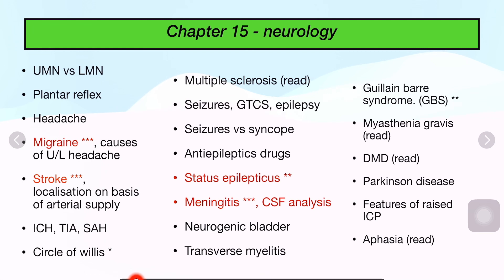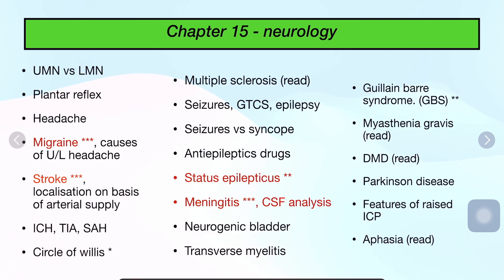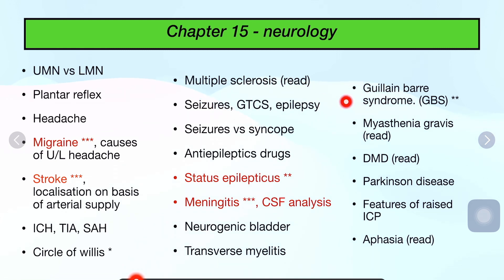Then comes Chapter 15, Neurology. This will also be a big topic, but you can do it. Topics include: upper motor neuron lesions versus lower motor neuron lesions, plantar reflex, headache, migraine, causes of unilateral headache, stroke, localization of stroke, intracranial hemorrhage, transient ischemic attack, subarachnoid hemorrhage, multiple sclerosis, seizures, GTCS, status epilepticus, seizures management, and anti-epileptic drugs.